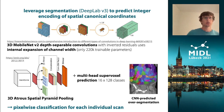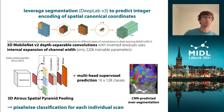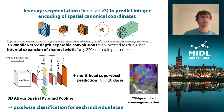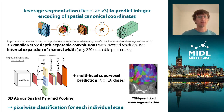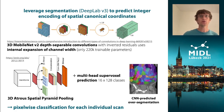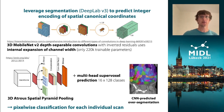We can then employ any segmentation pipeline to predict these integer encodings of spatial canonical coordinates. We opt for DeepLab, implementing a 3D backbone using MobileNet V2 with depth-separable convolutions, virtual residuals, and a very large internal expansion of channel widths, combined with 3D atrous spatial pyramid pooling that captures spatial context. In the end, we need a multi-head supervoxel prediction because we have 16 different layers, each with 128 classes.